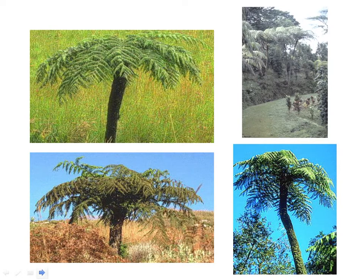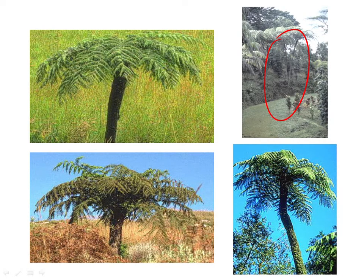Here are some more tree ferns — you can see they are in different regions of the world. They almost look like palms, but the leaves don't look quite right. Way back in the Devonian, there were plants that looked really like this, except they had seeds on the leaves — called seed ferns — and they were intermediates between the ferns and the existing seed plants.